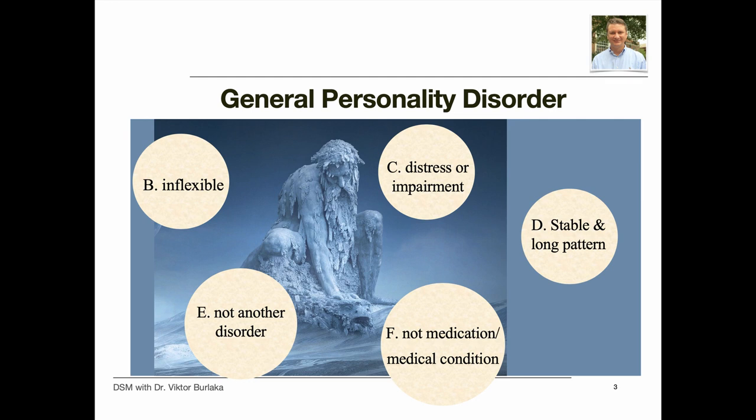Criterion B: the pattern of behaviors is fixed across a broad range of personal and social situations. Criterion C: the traits cause distress and impairment in relations, at work, and other important areas of life. Criterion D: behaviors have been present for a long period of time, at least from adolescence or early adulthood. Criterion E: the behaviors are not the result of another mental disorder. Criterion F: the behavioral pattern is not the result of substance abuse, medication use, or another medical condition, such as head trauma.